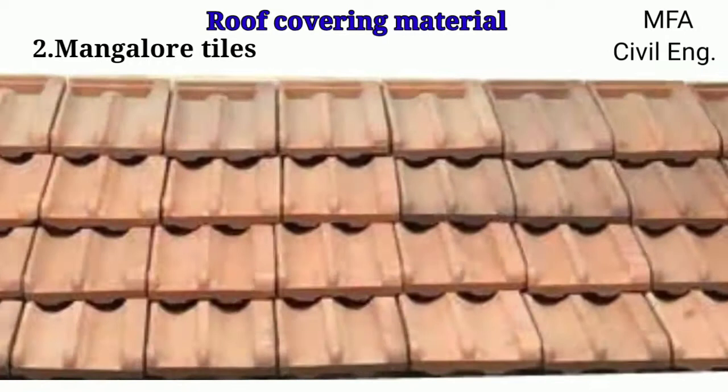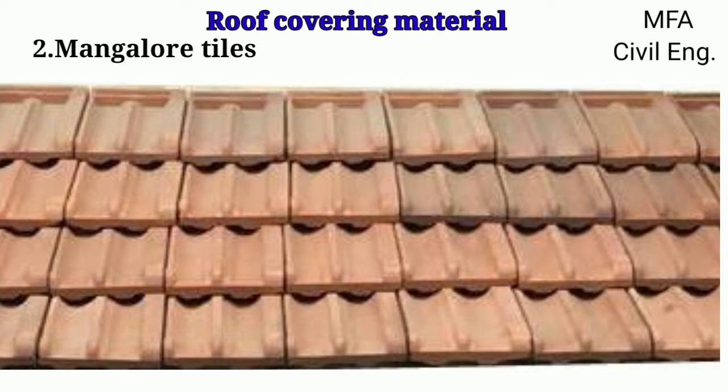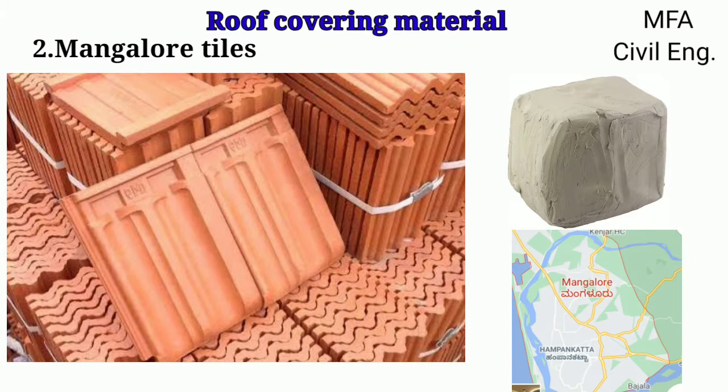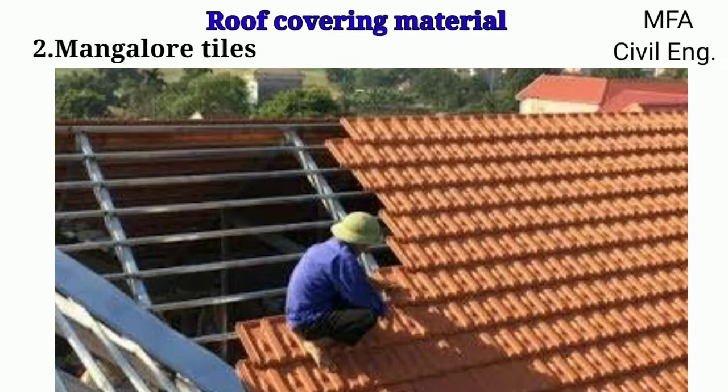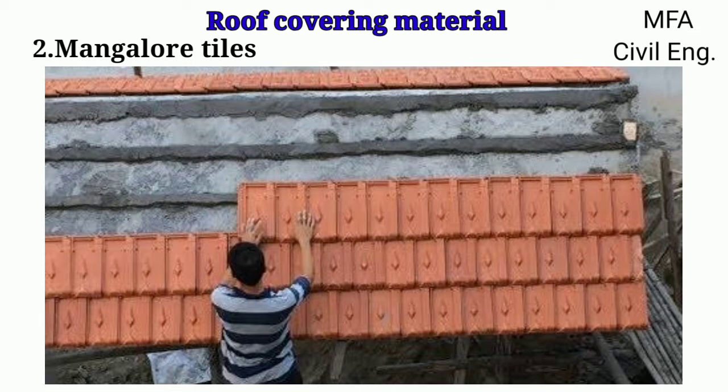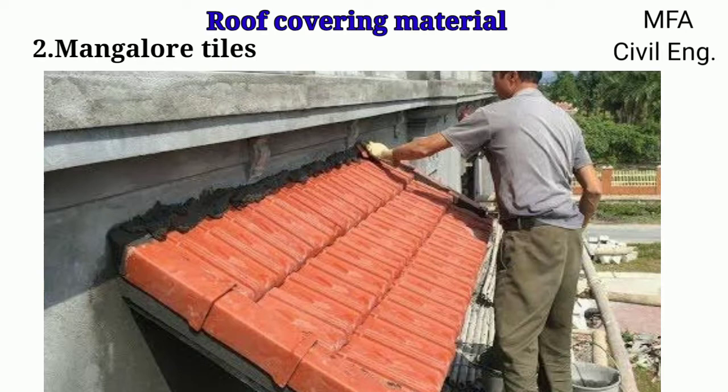Mangler tiles are generally rectangular in plan with surface corrugation, so arranged that the corrugation of a tile fits in or interlocks with those of the other tiles. These tiles are also made up of clay and were originally manufactured in a mangler. However, these tiles are available in different forms and designs in India. In ordinary work, the tiles are laid on the battens, but in superior type of construction, they are laid on boarding covered with a protective coat of tar. Mangler tiles offer a very strong, durable and economical roof covering for pitched roofs in India.